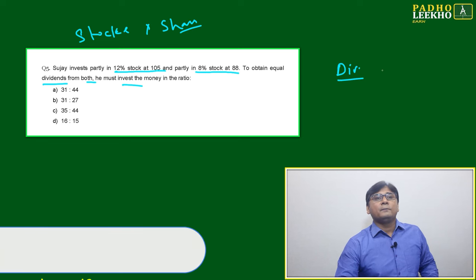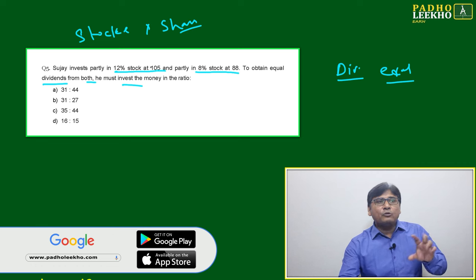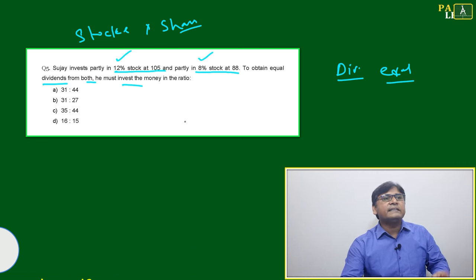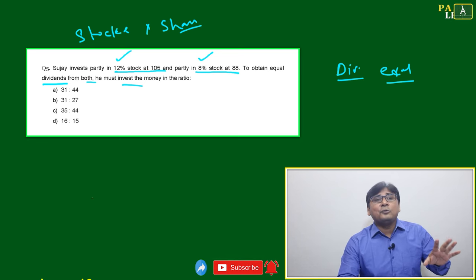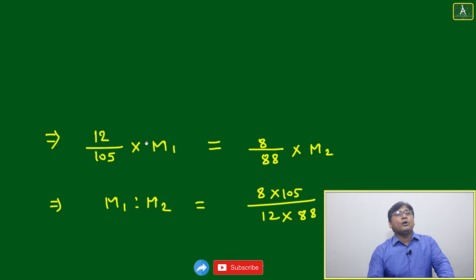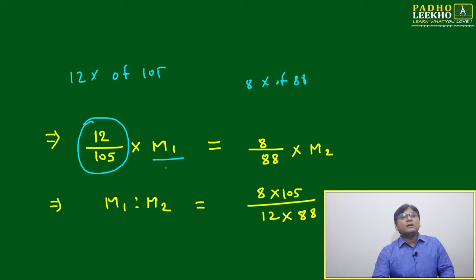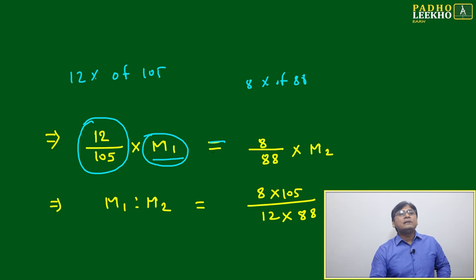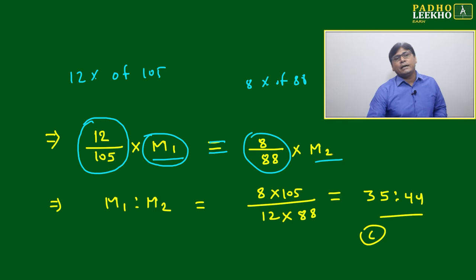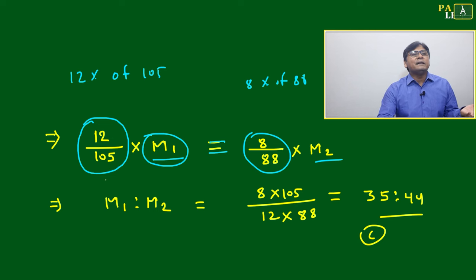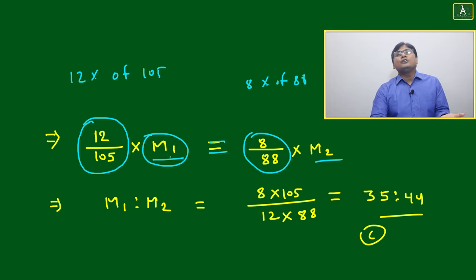In which ratio should he invest in 12% stock at 105 and 8% stock at 88 to get equal dividend? That is the only condition — dividend should be equal. Here, dividend amount and dividend percentage are different. The percentage is already given: 12% and 8%. To find the dividend amount: total investment divided by market value — we can directly calculate using this formula. This is your rate of return: 12% at 105 and 8% at 88.